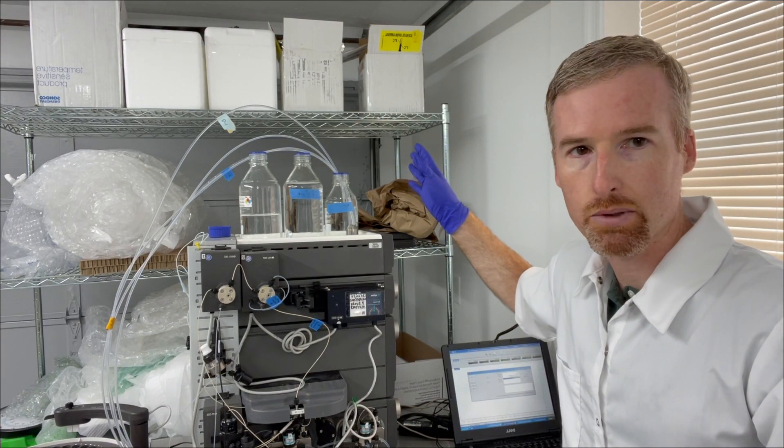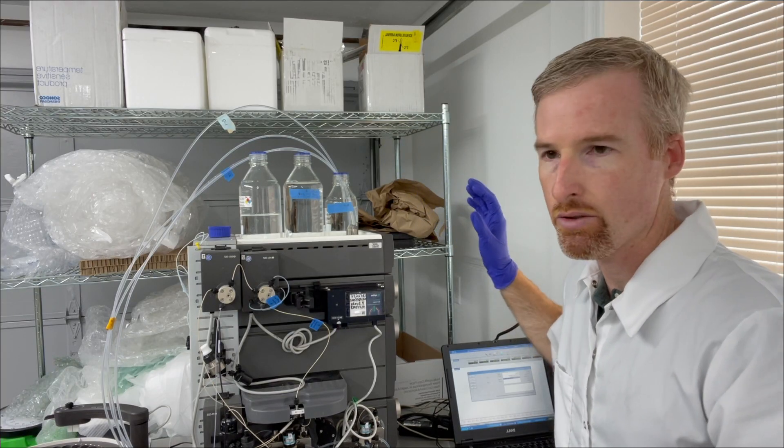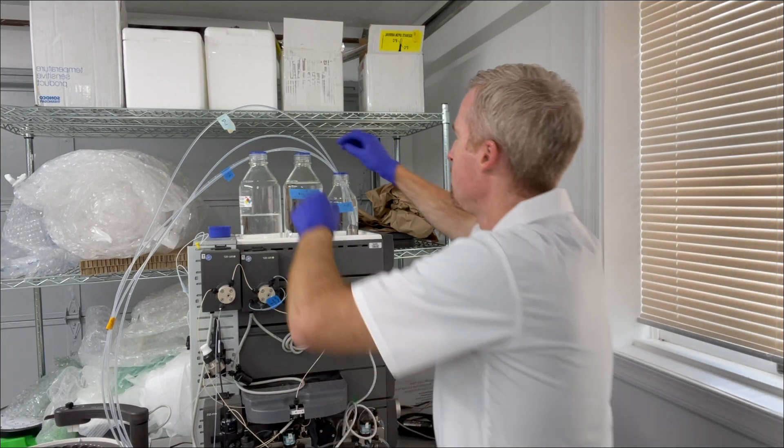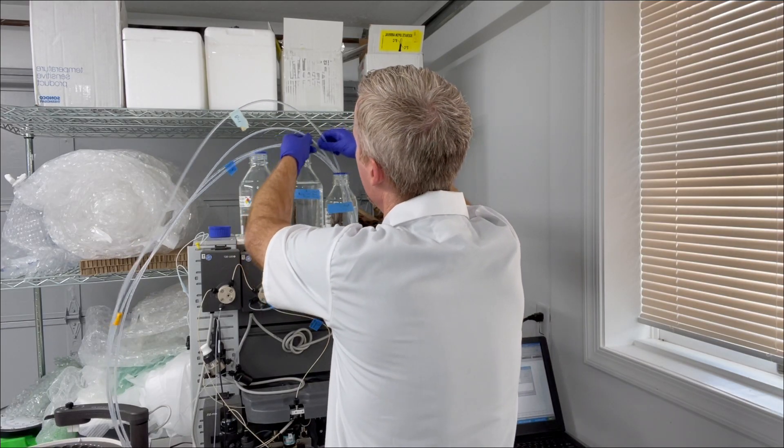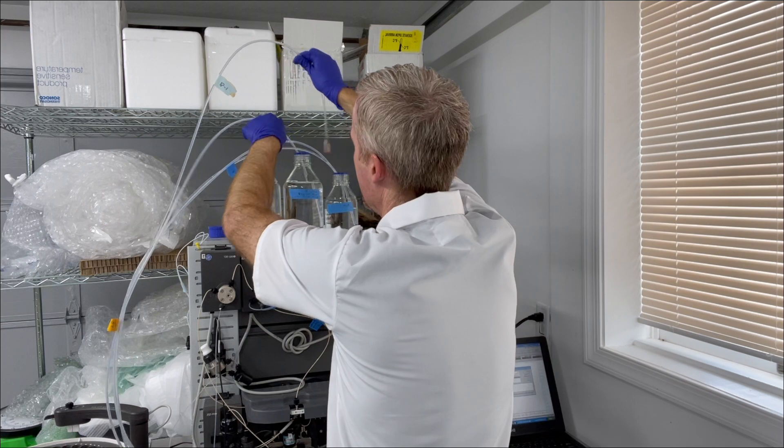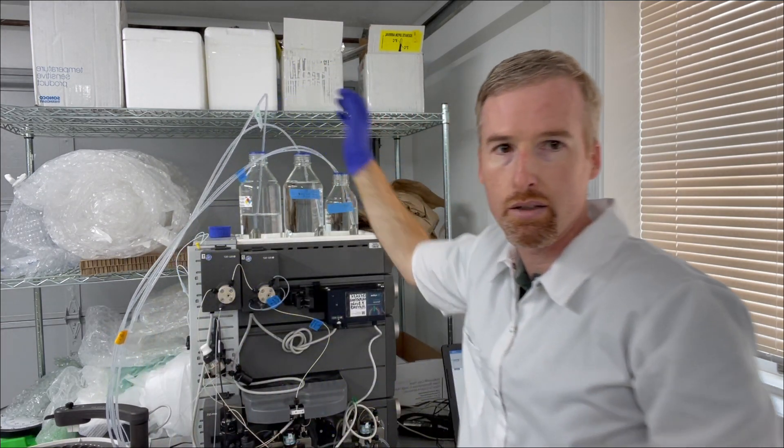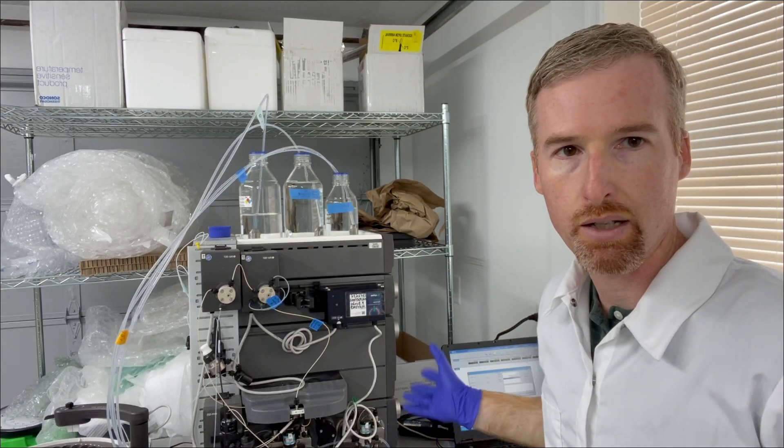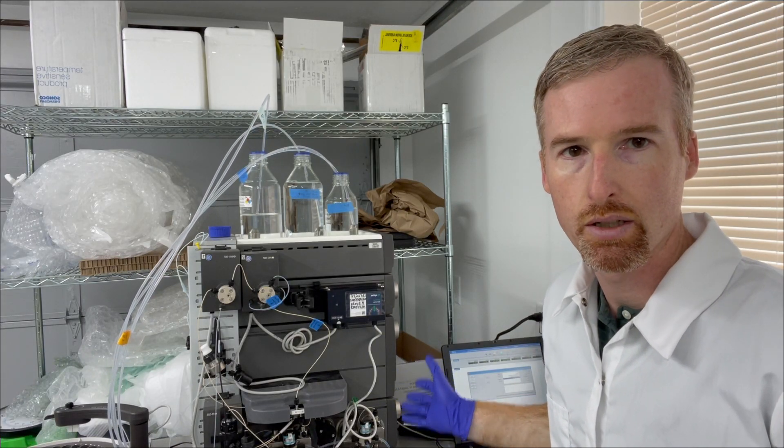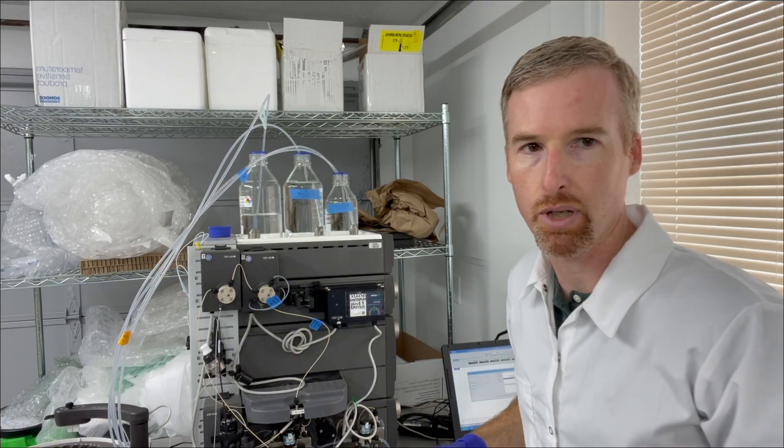I'm going to move the line labeled A1 into Buffer A and the line labeled B1 into Buffer B bottle, and then I'm going to use the automatic FPLC method. It's called pump wash. It's going to pull just enough buffer into the lines to fill the pumps.